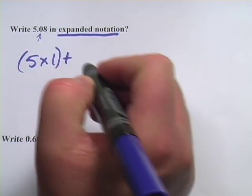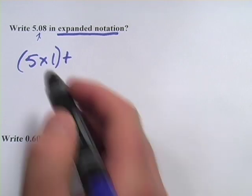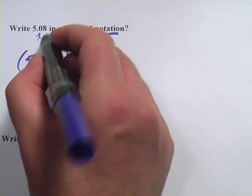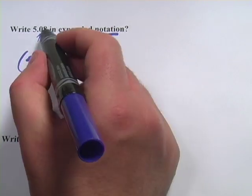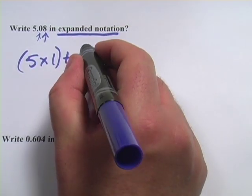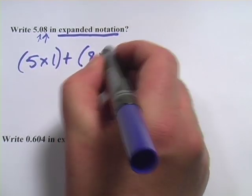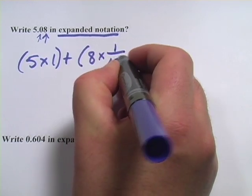This one is 0 times the tenths. Because it's 0 times the tenths place, we're not even going to write it. And then the next one is 8 times the hundredths place. So that would be like this, 8 times one hundredth.